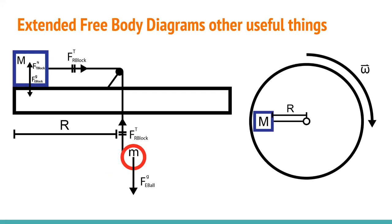Moving on to the extended and free-body diagrams, we put more detail into the diagram given to us. On the left we have the block on the turntable with its forces shown — one big thing to highlight is the two tension forces, which are equal, and the radius big R which is the radius of the turntable. On the right is a top-down view of the turntable with the block shown, and you can see the angular velocity we're trying to find.